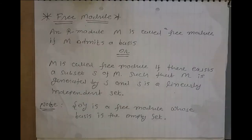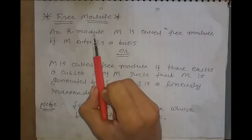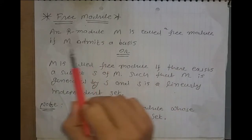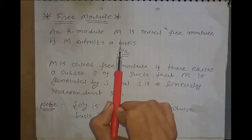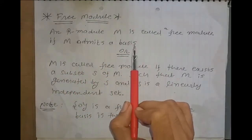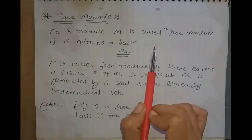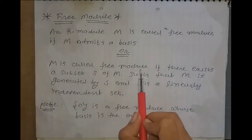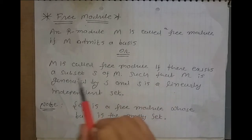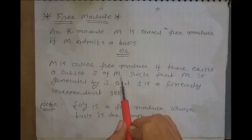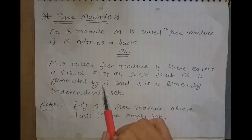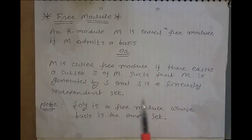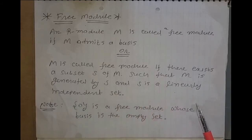In this lecture we will discuss about the free module. An R-module M is called a free module if M admits a basis. In other words, M is called a free module if there exists a subset S of M such that M is generated by S and S is a linearly independent set. This is the definition of basis and free module.